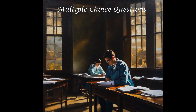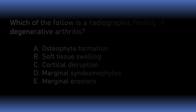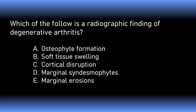Now for a few sample multiple choice questions. Which of the following is a radiographic finding of degenerative arthritis — is it osteophyte formation, soft tissue swelling, cortical disruption, marginal syndesmophytes, or marginal erosions? The correct answer is A: osteophyte formation.